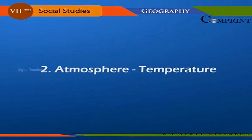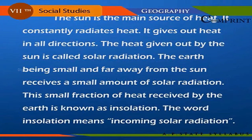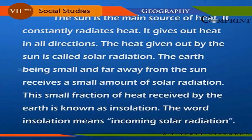The sun is the main source of heat. It constantly radiates heat in all directions. The heat given out by the sun is called solar radiation. The earth, being small and far away from the sun, receives a small amount of solar radiation. This small fraction of heat received by the earth is known as insolation — the word insolation means incoming solar radiation.